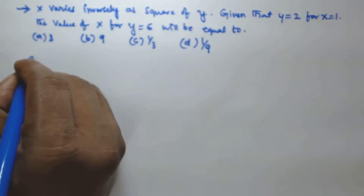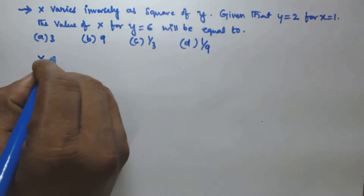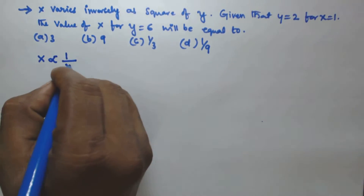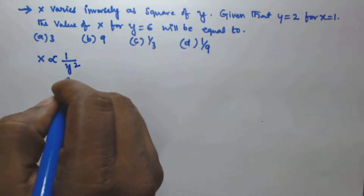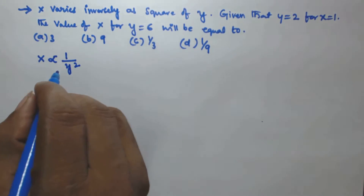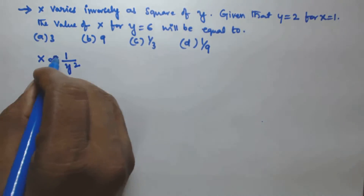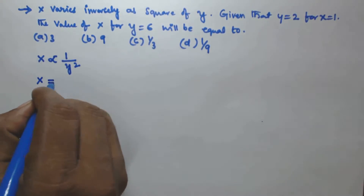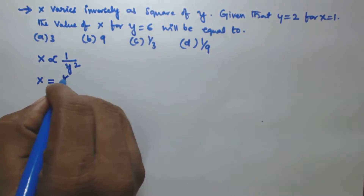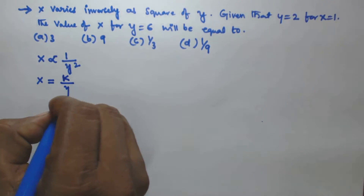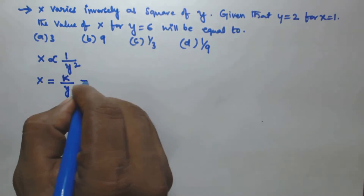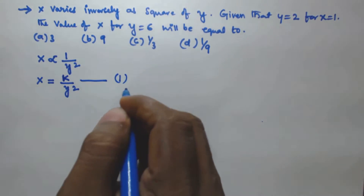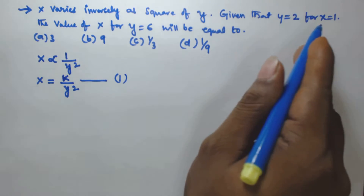We represent x varies inversely to the square of y, so x is inversely proportional to 1 by y squared. Now to remove this proportion we introduce a constant called k, so it becomes x is equal to k by y squared. Let us call this equation 1.